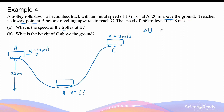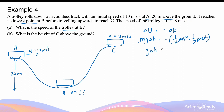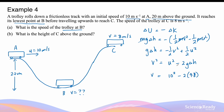The change in gravitational potential energy equals the negative change in kinetic energy: g delta h equals minus half v² plus half u². So v² equals u² minus 2g delta h, and v equals the square root of 10² minus 2 times 9.8 times negative 20 meters. This gives a final speed of 22.2 meters per second at point B.